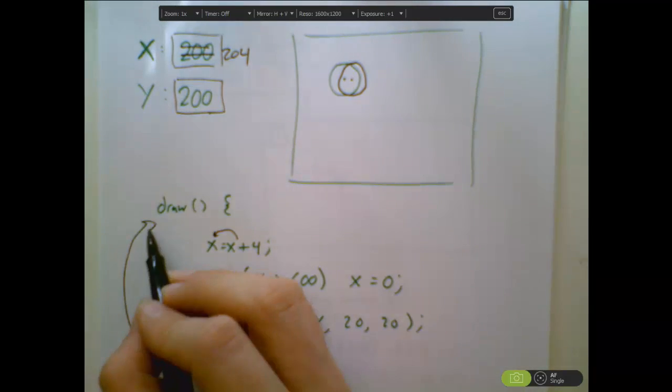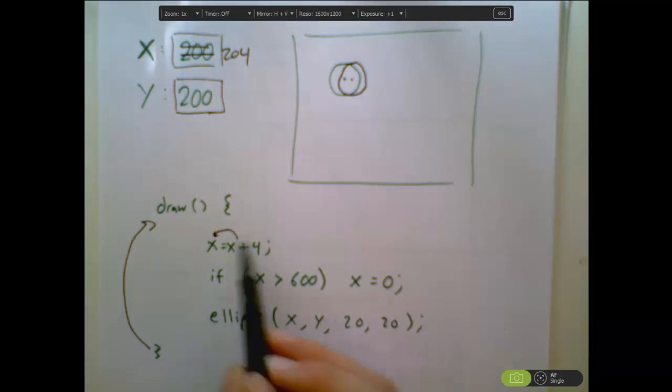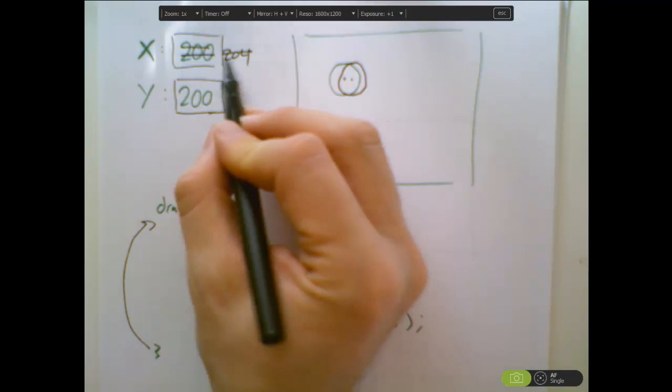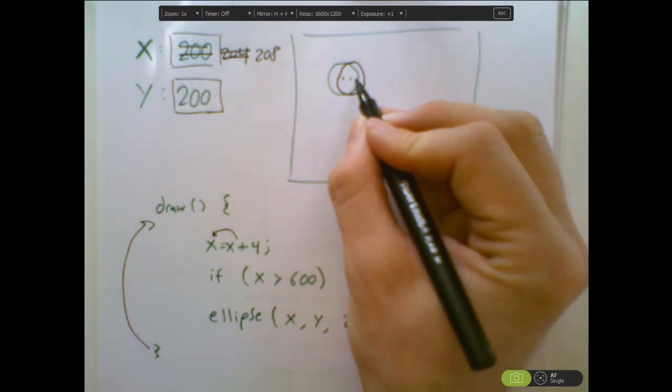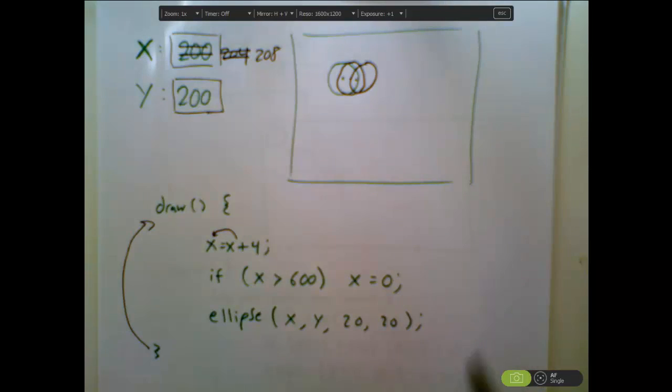If I repeat the draw loop from the top, I do all of that again. I increase the x coordinate by 4, so now this is 208. I check if it's bigger than 600, but it isn't. So now I draw an ellipse at 208, 200, and so that moves the ball over a little bit again. This is an idea you're familiar with. That's how the process happens.